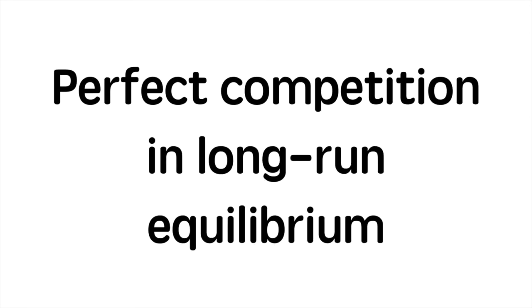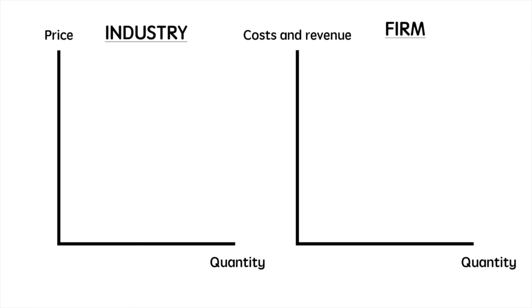Now let's get to the diagram. This is usually a source of a lot of confusion for economics students, so I'll break it down into small steps. If you have questions at any point, write them in the comments. To make this very clear, we'll look at two diagrams side by side. The industry we'll use is the hypothetical market for widgets. On the left we have the diagram for the widget industry — the supply and demand curve. On the right is the perfectly competitive firm's cost and revenue curves.